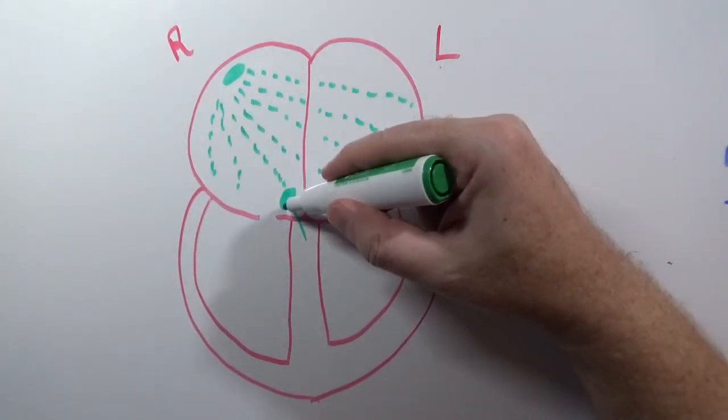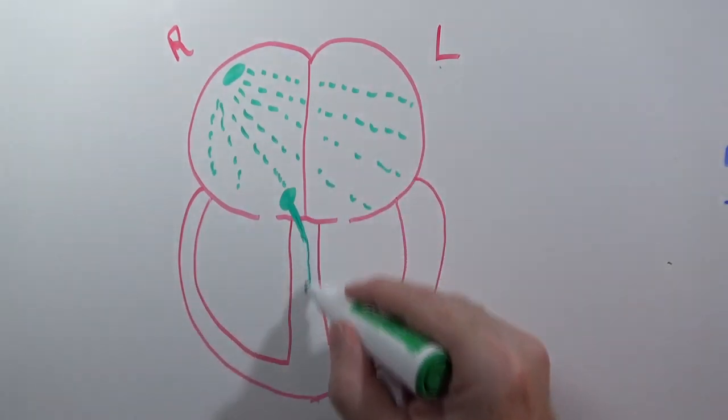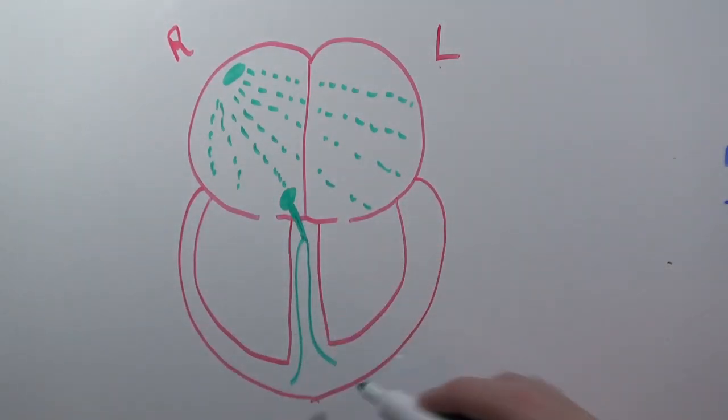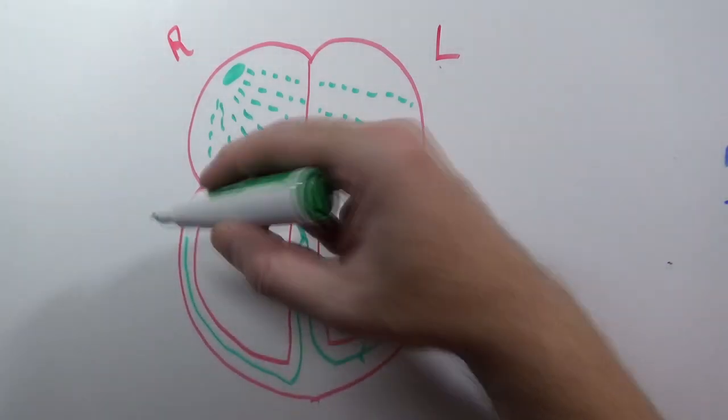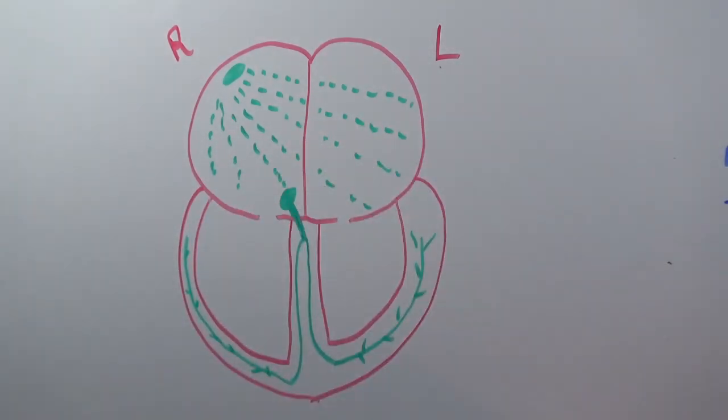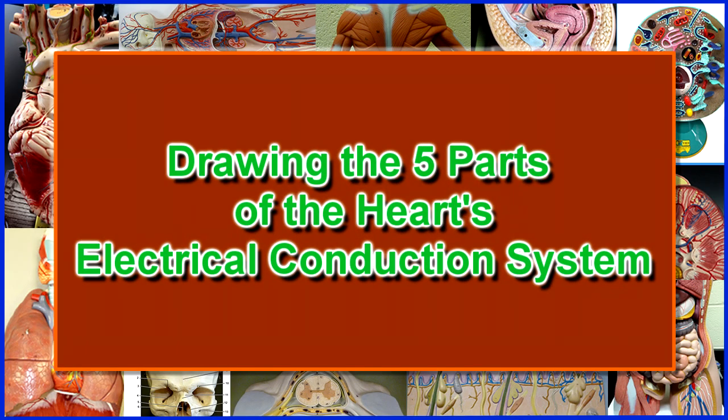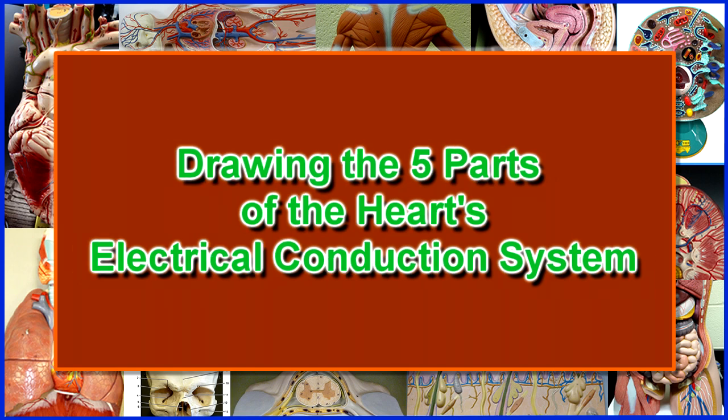Certain parts of the heart need to be stimulated to contract at certain times. This electrical conduction system helps to ensure the parts of the heart contract at just the right time so the blood keeps flowing in a positive, forward direction through the heart. In this video I'll draw the electrical conduction system so you can learn how to draw it too.